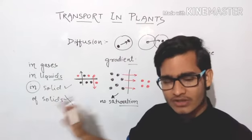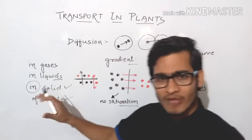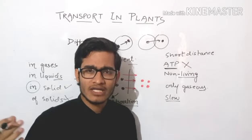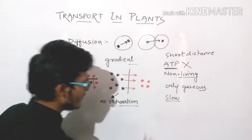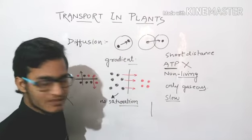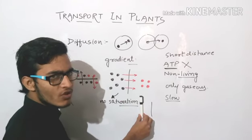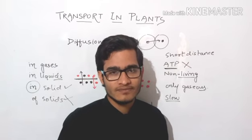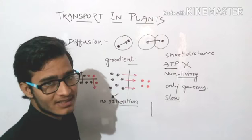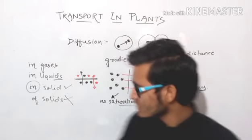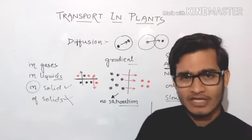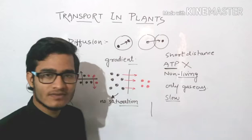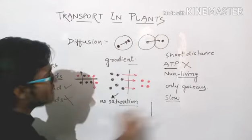This is quite important and is also given in NCERT — it is a jumbled line so you have to underline it. Diffusion in solids may take place, but diffusion of solid cannot take place, because solid particles cannot move. For example, this is the membrane, and on one side there is a pen — that pen cannot move from this side to the other side. So diffusion of solids cannot take place.